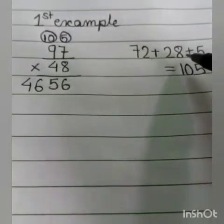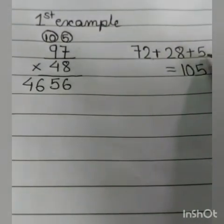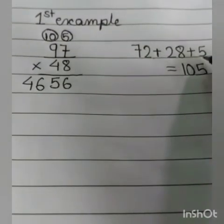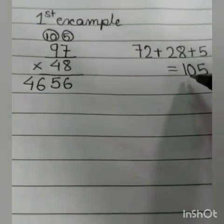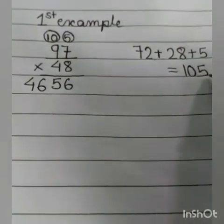Which I have written here. So now we will multiply these two numbers, that is 28, plus the carry-on number. When we add these three numbers, we get the result as 105. We have to write 5 here and 10 will be carried on.